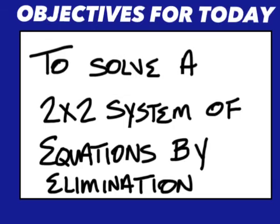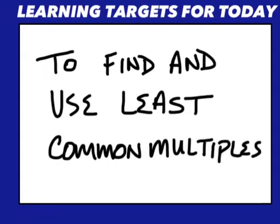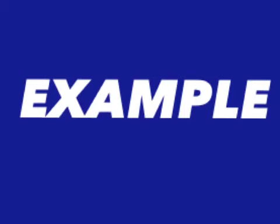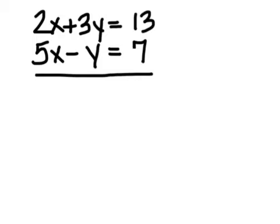To solve a 2x2 system of equations by elimination, and also to find and use common multiples. Example: 2x plus 3y equals 13, and 5x minus y equals 7.